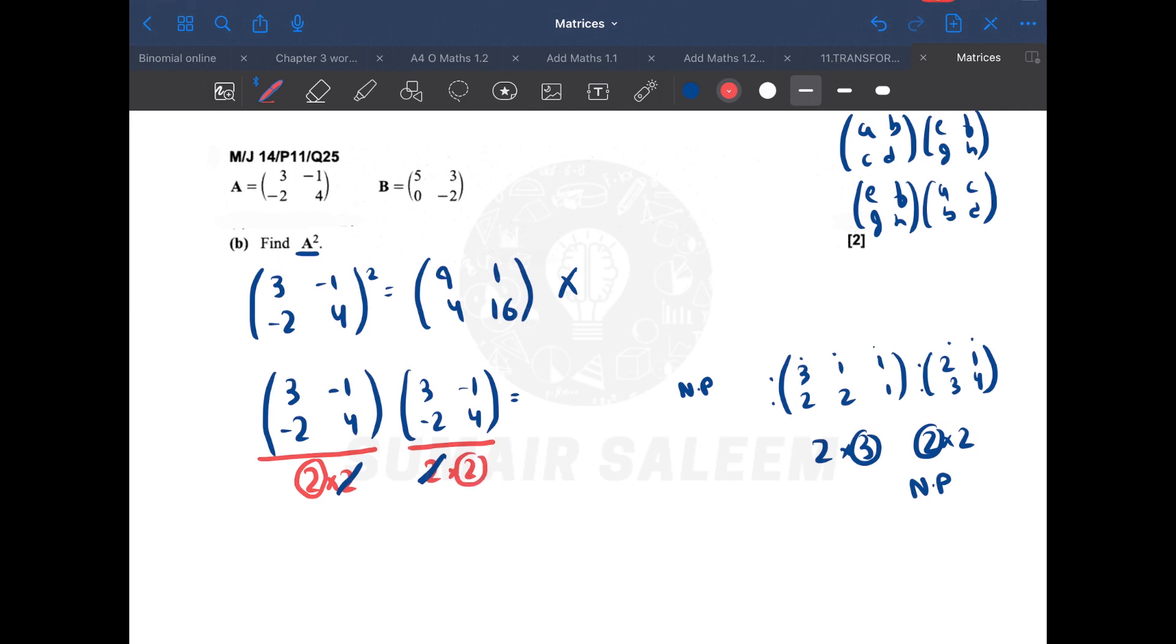Then make a smiley face. What does this smiley face mean? This smiley face means that your answer will be in this order, 2 by 2. So when is multiplication possible? When the column of the first matrix and the row of the second matrix is same. The answer's order is these two.